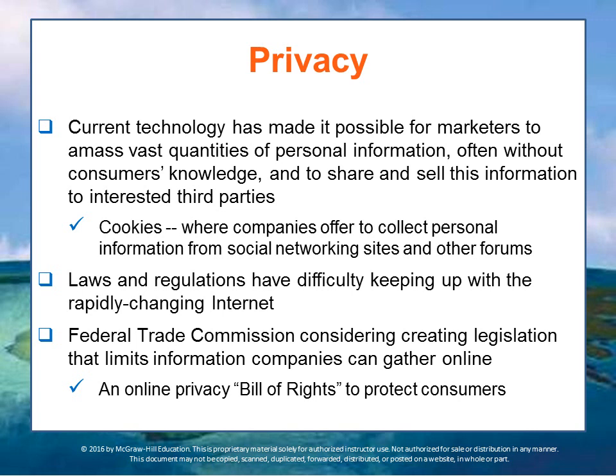First, we'll talk about privacy concerns, which are probably the most urgent of the legal issues today. Consumer surfing and purchasing behavior is often tracked on the internet through things called cookies — software that stays on your computer and keeps track of what you do, storing information about specific customers. Another internet privacy issue that occurs frequently is scraping, where companies collect personal information from social network sites and other forums. Since internet privacy issues have become such a problem, regulators are proposing bills to address them.